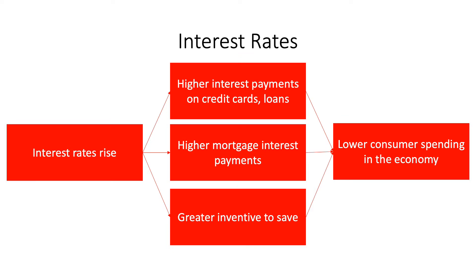What exactly happens to consumer spending and business investment when interest rates change? Let's look at what happens when interest rates rise. If interest rates rise, then repayments on variable rate mortgages will increase. The rate hike will also make interest payments on credit cards and loans more expensive, and both of these reduce the disposable income available to consumers to spend elsewhere in the real economy, such as in local shops or online retailers.